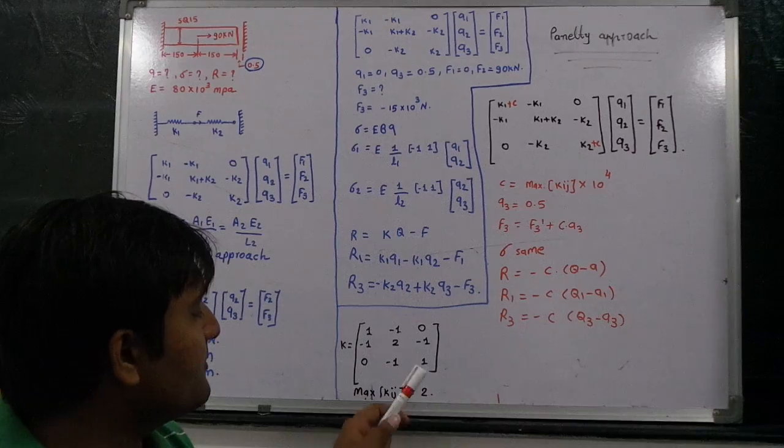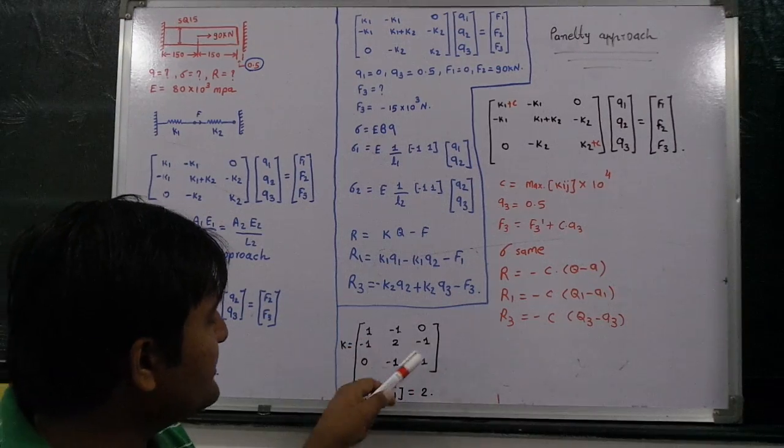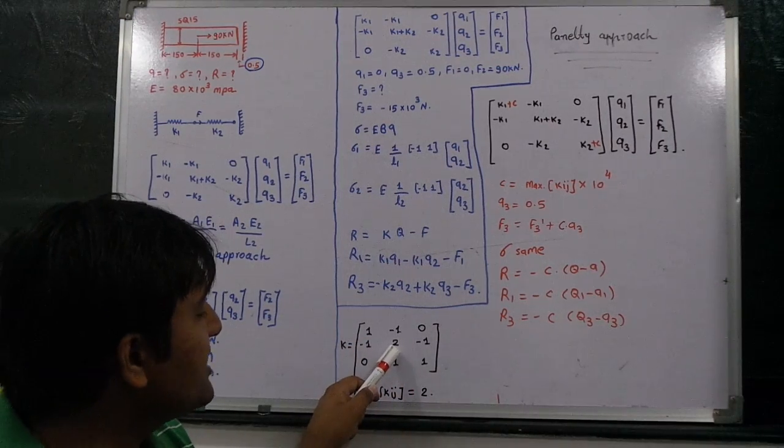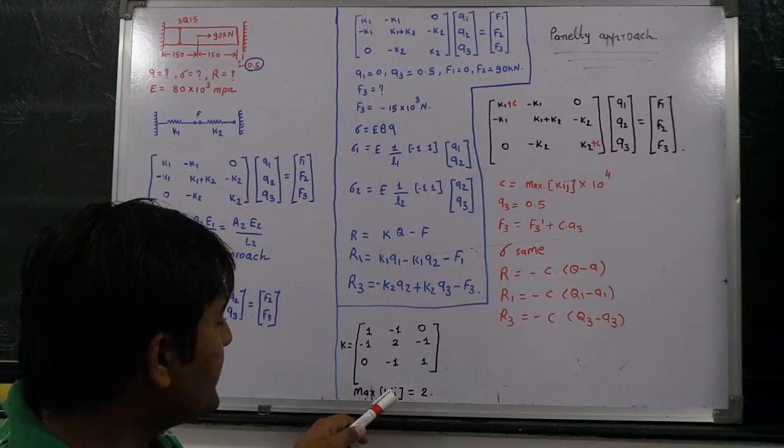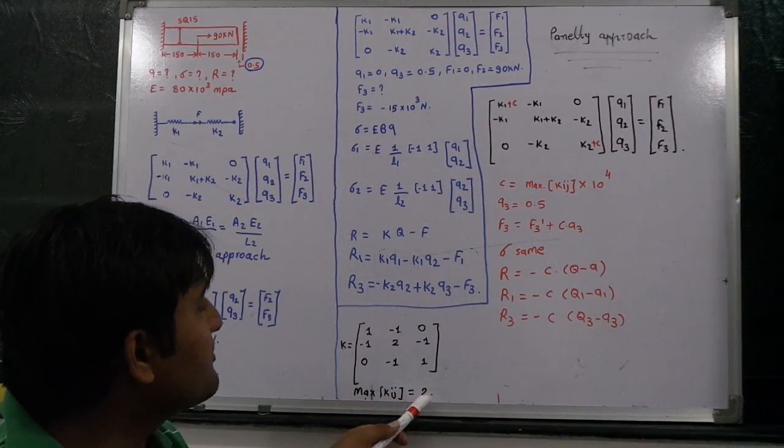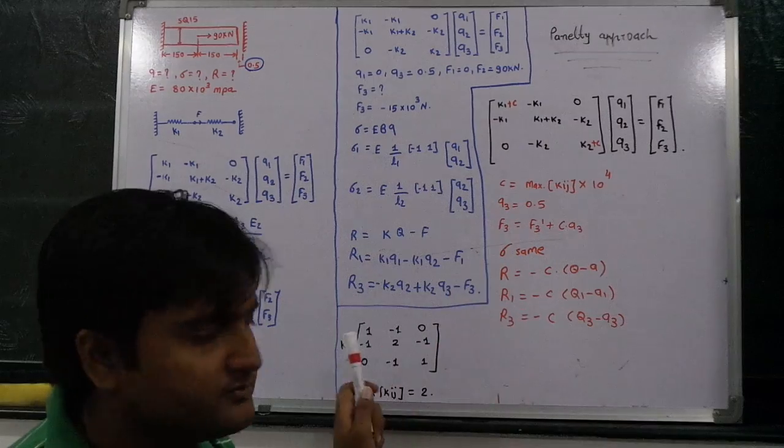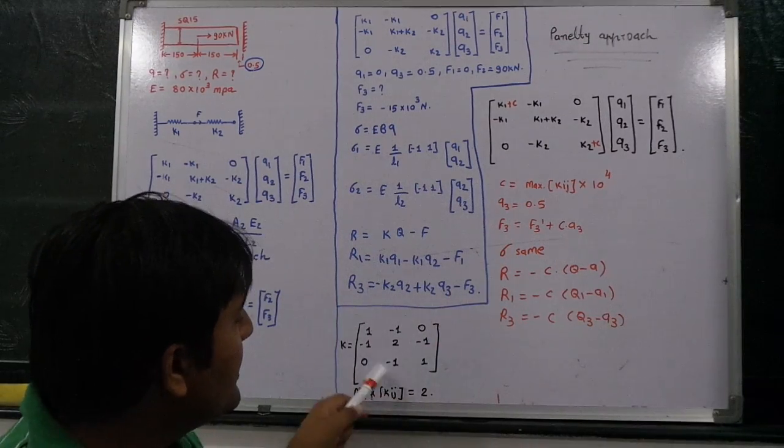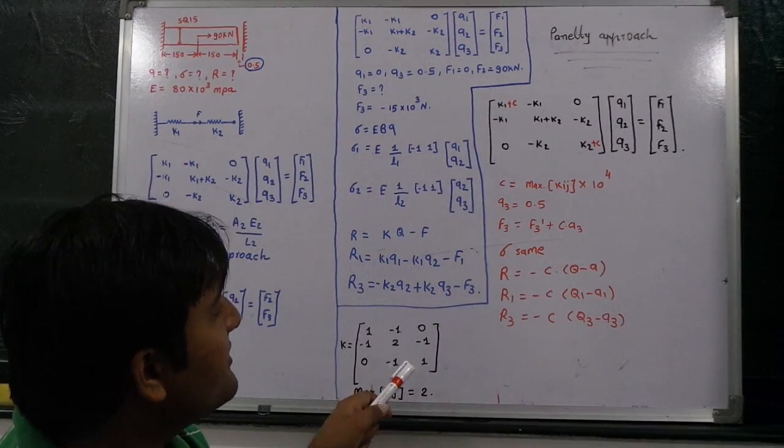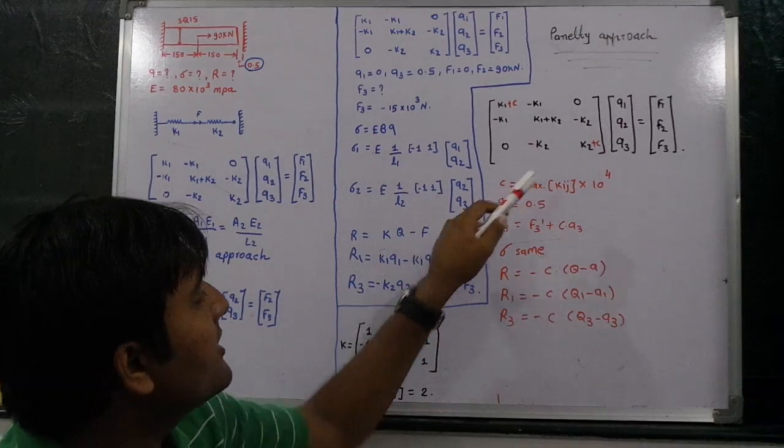What is the maximum value out of this matrix? 2. So we need to take maximum Kij is equal to 2. Maximum Kij is equal to 2 multiplied by 10 raised to 4. That should be found by using this matrix as well.